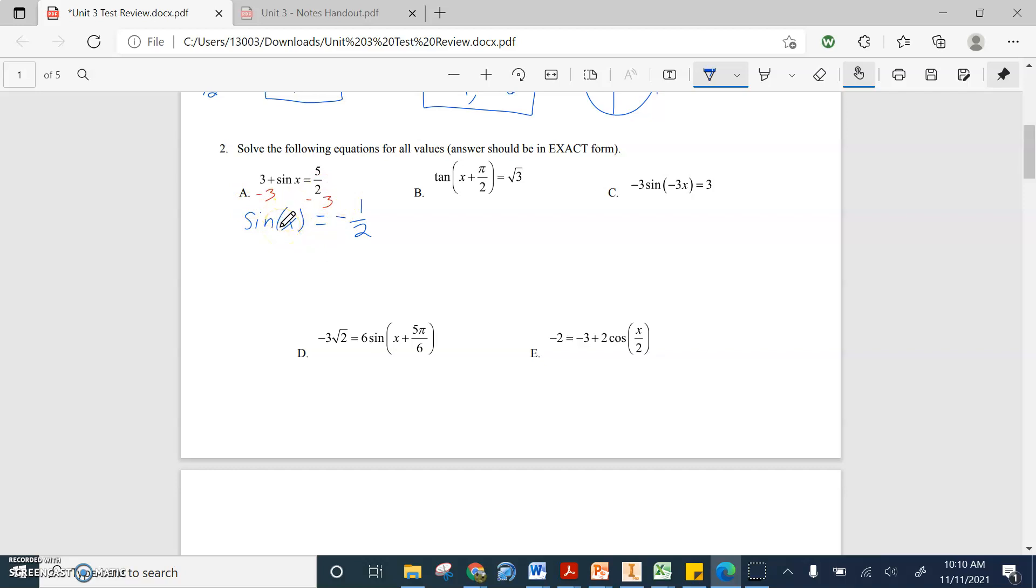Step two is going to be taking and getting x by itself, like undoing the trig function. So if we take arcsine of sine x, we get x equals. If we take the arcsine of the left side to undo sine, we take the arcsine of the other side.